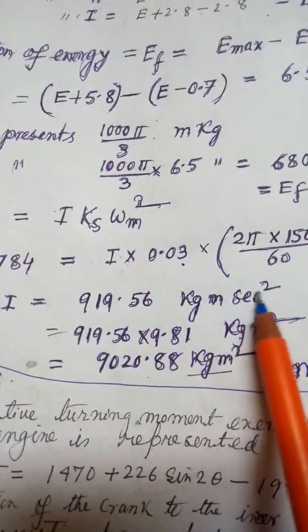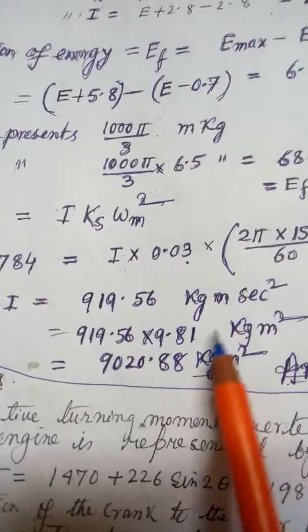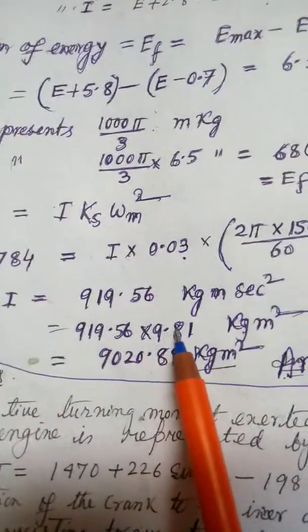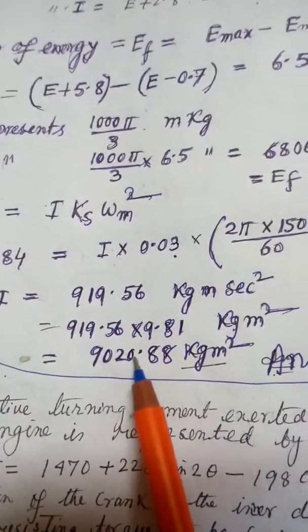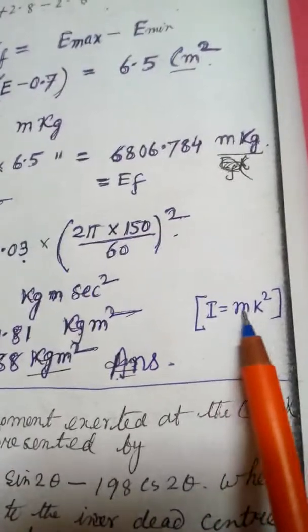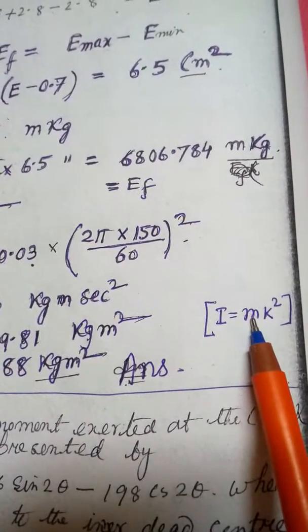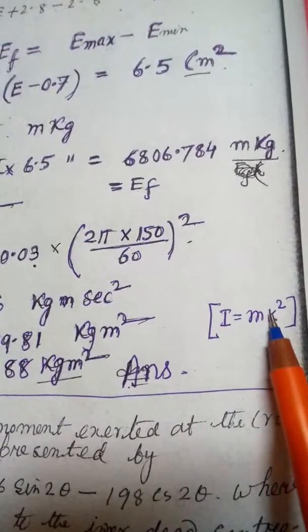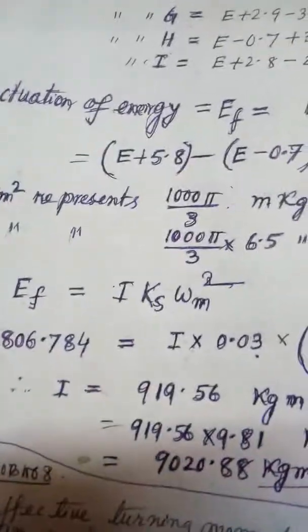Kg meter times second squared. You can do it newton meter times second squared, but actually I will be in kg meter squared. 92.88 kg meter square. Actually I equals mk squared, m is the mass in kg, so this will be in meters. So kg meter squared is the answer. Thank you.